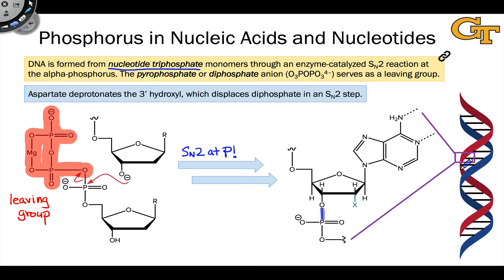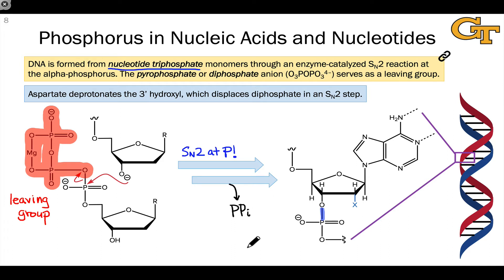This is just one monomer unit along the nucleic acid chain. Note also that this process generates the pyrophosphate or diphosphate anion, PPi, as a leaving group, demonstrating once again that phosphates, diphosphates, and even triphosphates act as nature's leaving groups.